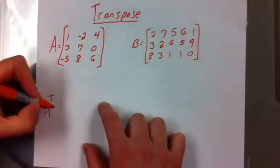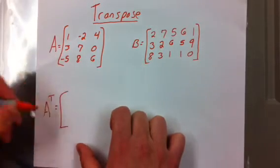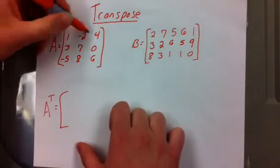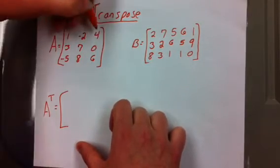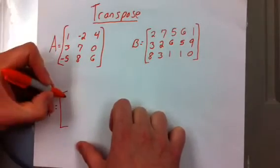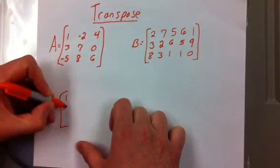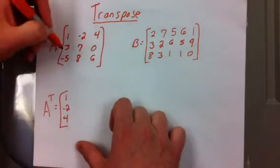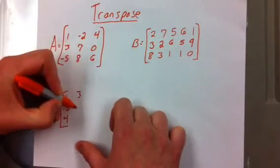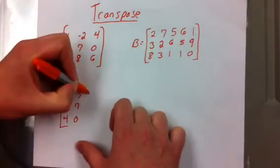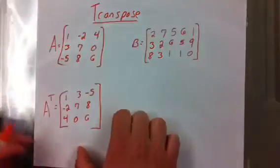A transpose, the T up top means transpose. So we're just going to take the first row here, we've got 1, negative 2, and 4. So when you switch rows and columns, the first row is now going to become the first column. So you have 1, that's going to stay the same, but then your negative 2 is down here, and your 4. And then you move on to the next row, which becomes your next column. So you have 3, 7, 0, and likewise negative 5, 8, and 6. And that is A transpose.